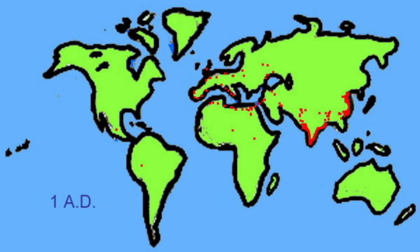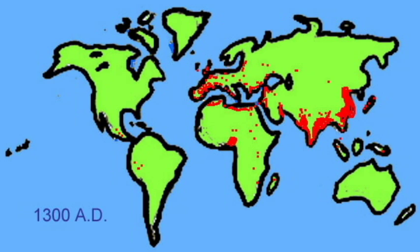This is another way of looking at this. This is modified from a video which was shown at the Museum of Natural History. In this animation, each red dot represents a million people on planet Earth. And you can see that for most of our history, there haven't been that many people living on planet Earth.